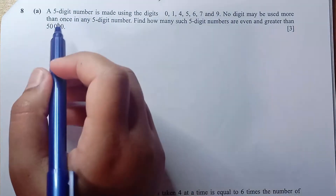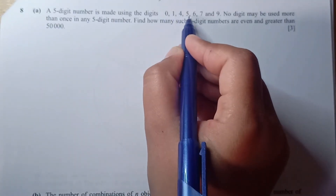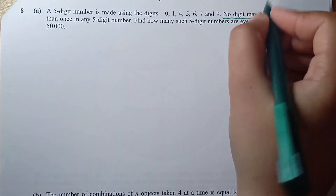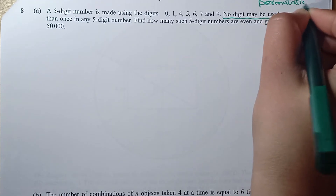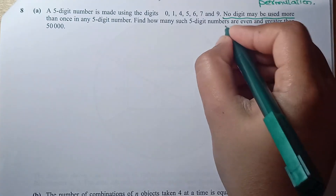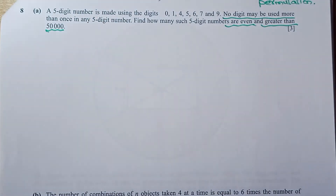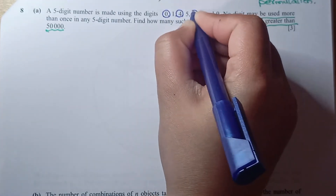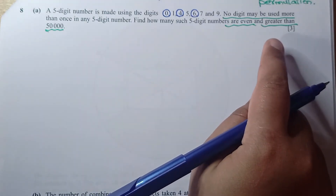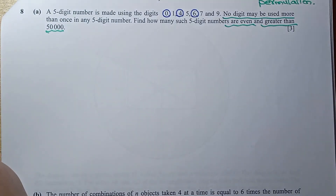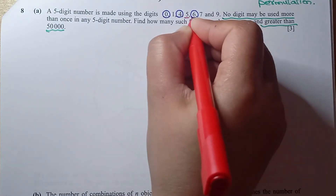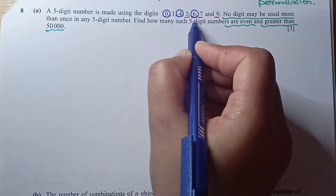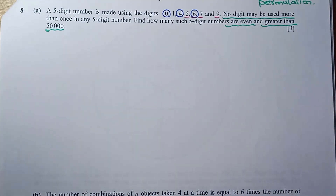Question number 8, part a: a 5-digit number is made using digits 0, 1, 4, 5, 6, 7, and 9 with no repetition. Find how many such 5-digit numbers are even and greater than 50,000. Even digits are 0, 4, 6. For the number to exceed 50,000, the first digit must be 5, 6, 7, or 9. Since 6 is both even and greater than 50,000 as leading digit, we use two cases.